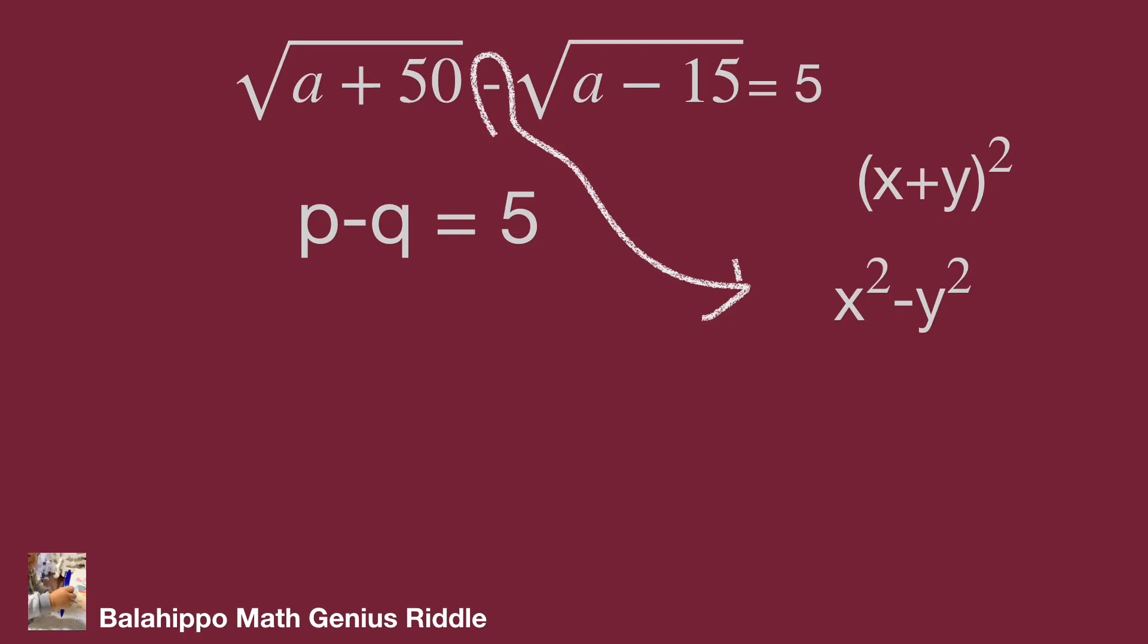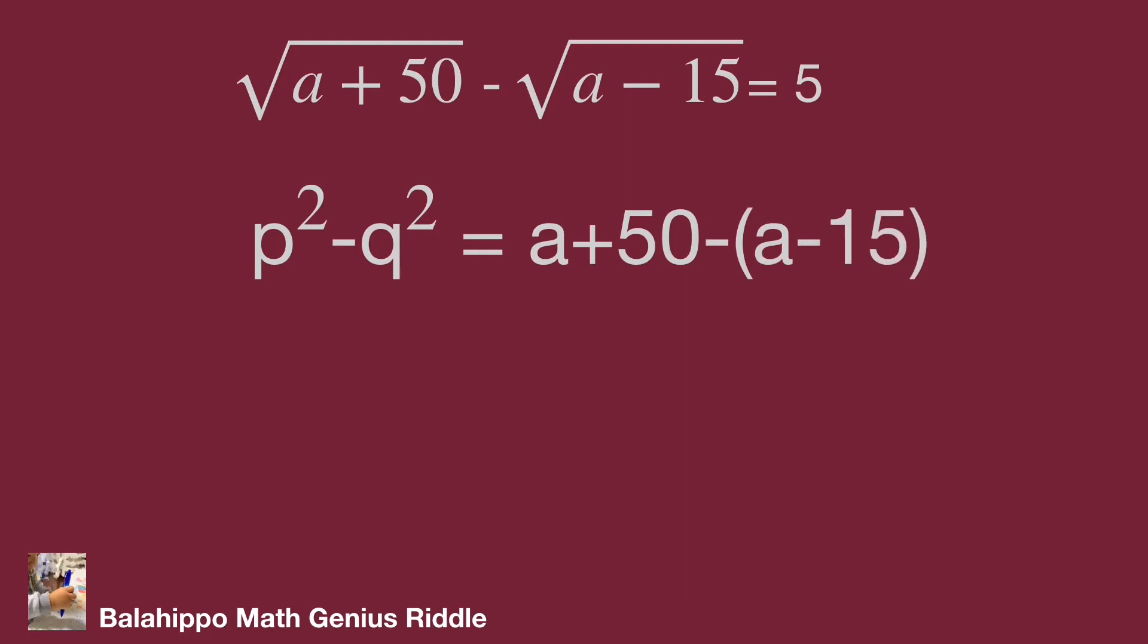Use x square minus y square formula. Then the equation becomes p square minus q square equal to a plus 50 minus a minus 15. Factorize p square minus q square, then it becomes quantity p plus q multiplied by quantity p minus q equals 65, and p minus q equals 5.